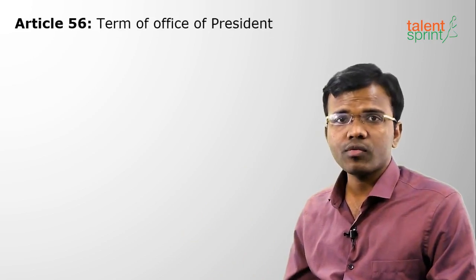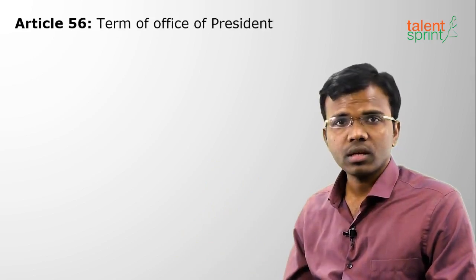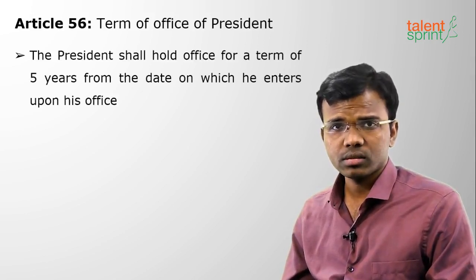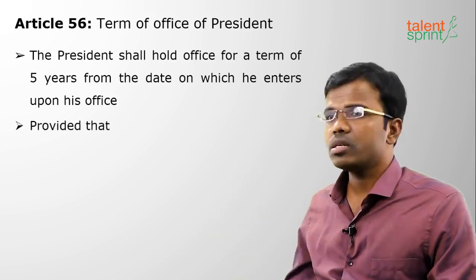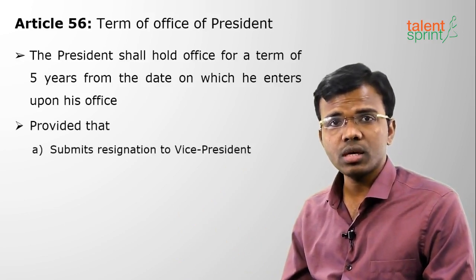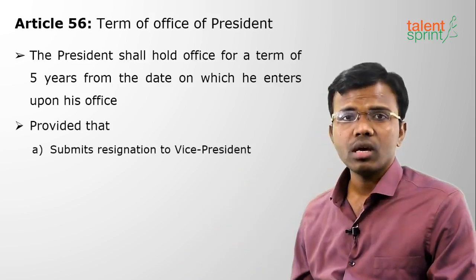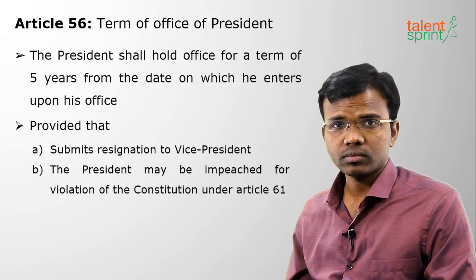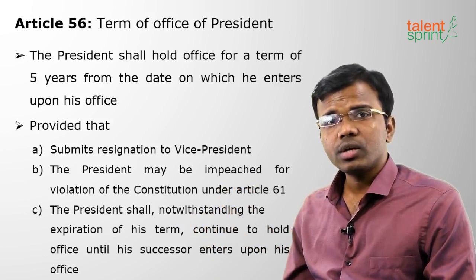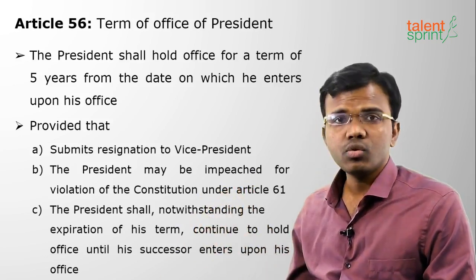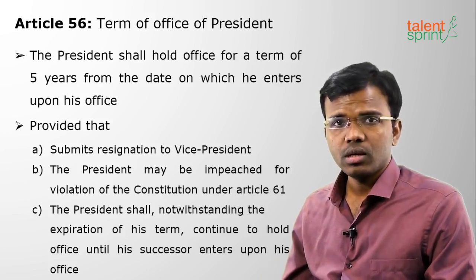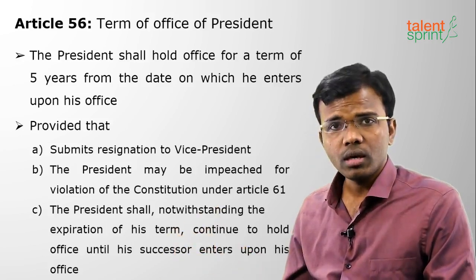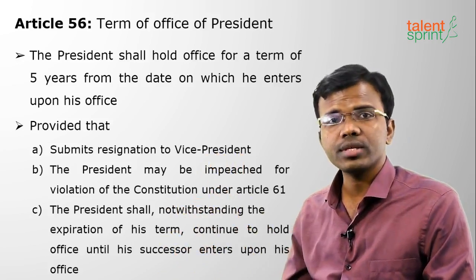Moving on to the term of office of the President — it is five years from the date of appointment. The President may submit resignation to the Vice President, not the Prime Minister or anyone else. He may also be removed under Article 61, that is impeachment. The President shall continue even after the expiration of the term until the new President comes to office.